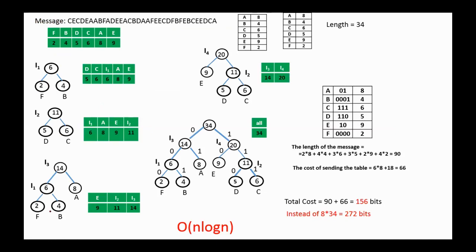For example, suppose the alphabet used is the letters A, B, C, D, E, F, and we have the following message where character A is repeated 8 times, B 4 times, C 6 times, and so on. We can construct the Huffman tree by selecting the two least frequently used characters.